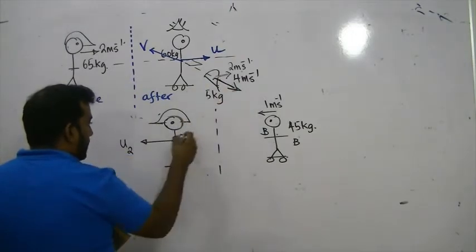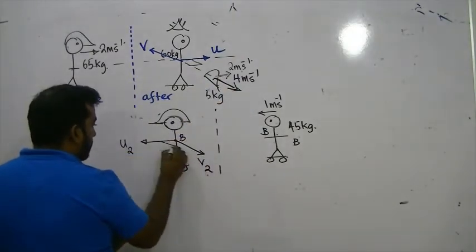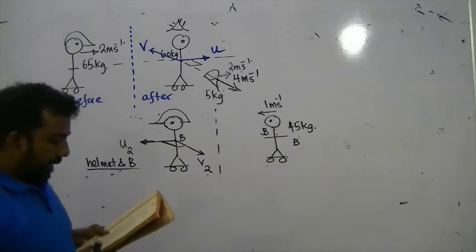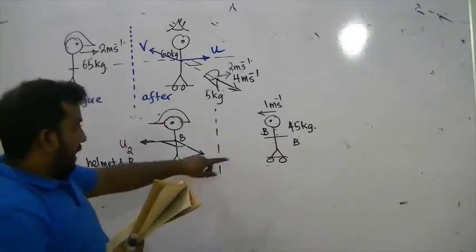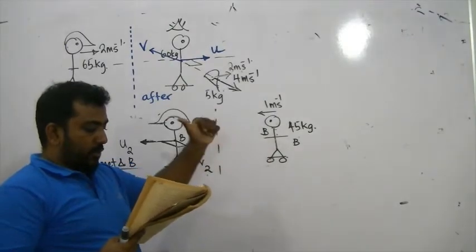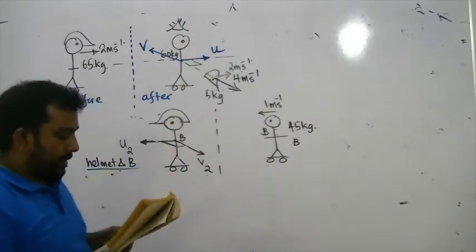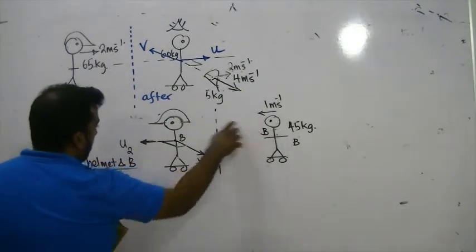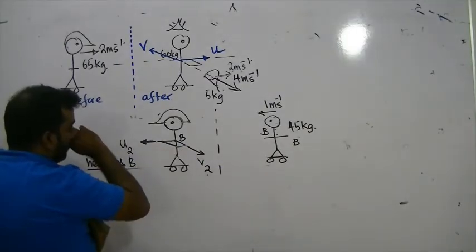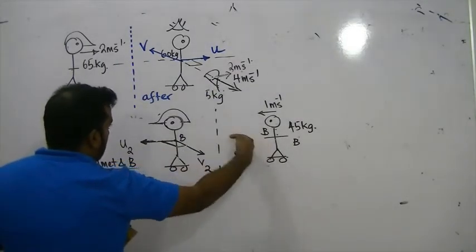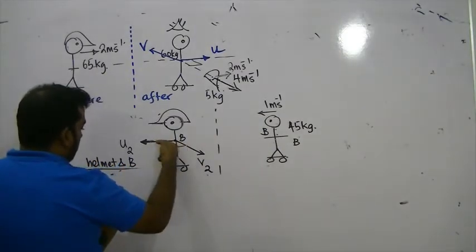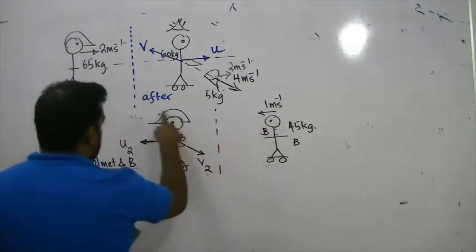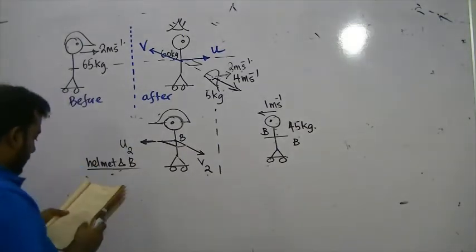When skater B catches the helmet, the initial momentum in the forward direction must equal the final momentum in that direction. Is there initial momentum in the perpendicular direction? Yes — from the helmet's perpendicular velocity. So final momentum must also exist in the perpendicular direction. We apply conservation of linear momentum in both directions.